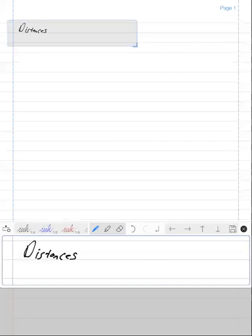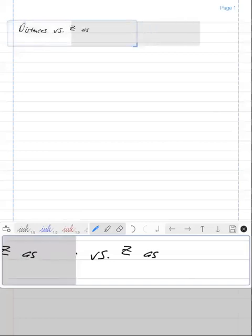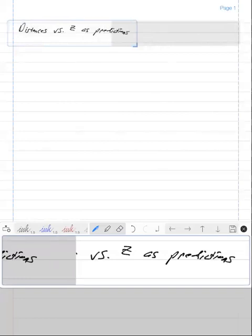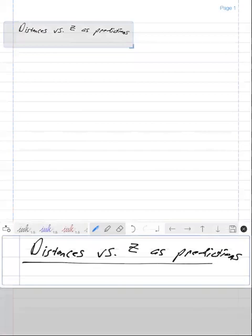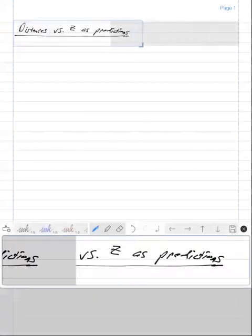And one of the most fundamental predictions that cosmology can make is distances versus redshift as predictions. So how do distances matter? In cosmology there are basically two kinds of observations. You're either going to measure the brightness of something and so how far away that object is determines how bright it is. Or you might measure how big this object appears on the sky and that angular size on the sky also depends upon the distance.